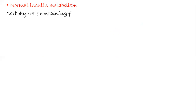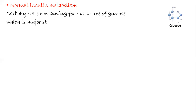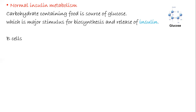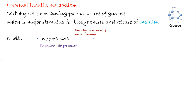First, we'll see normal insulin metabolism. Carbohydrate-containing food is a source of glucose, and glucose is a stimulating factor for both synthesis and release of insulin. The beta cells in the pancreas are responsible for production of pre-pro-insulin, an 86 amino acid precursor. This pre-pro-insulin undergoes proteolysis with removal of one amino terminal, giving rise to pro-insulin.